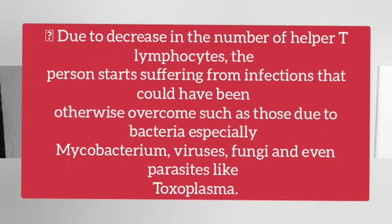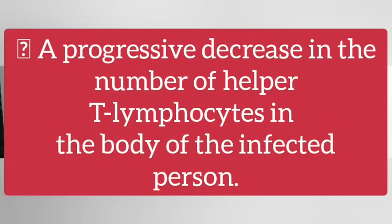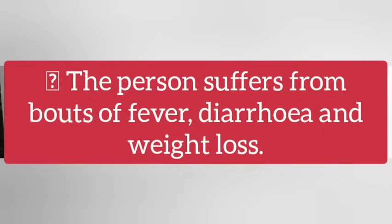How does HIV infect the human body? Answer: Due to a decrease in the number of helper T lymphocytes, the person starts suffering from infections that could have otherwise been overcome, such as those due to bacteria — especially Mycobacterium — viruses, fungi, and even parasites like Toxoplasma. There is a progressive decrease in the number of helper T lymphocytes. The person suffers from bouts of fever, diarrhea, and weight loss.